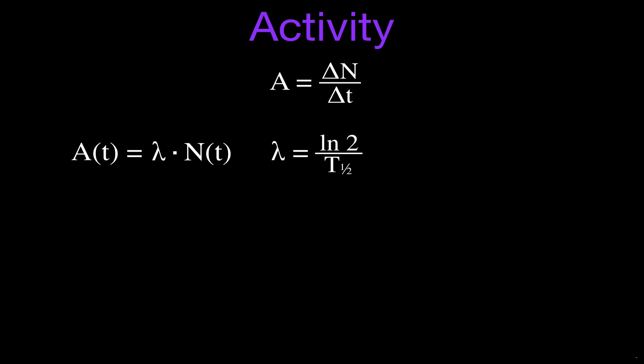The decay constant lambda is calculated as the natural log of 2 divided by the half-life of the sample. You have to be careful with units: the half-life is often given in years — for carbon-14 it's 5,730 years — but when calculating activity you must convert the half-life from years into seconds. Combining these two equations, the activity at time T equals the natural log of 2 times Nt divided by the half-life.